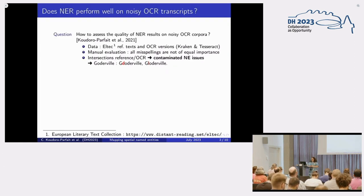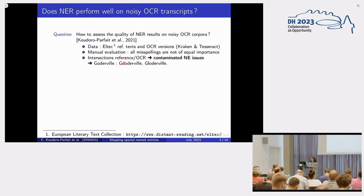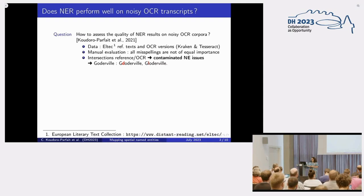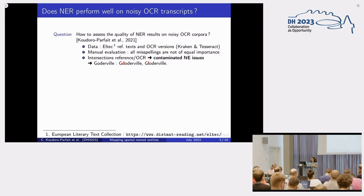The first question we asked when we started our work is how to assess the quality of the NER results on noisy OCR corpora. We used LTEK, a European literary text collection, as our reference corpus. We used the French collection of novels, and we used Kraken and Tesseract to create our OCR versions.